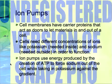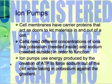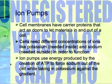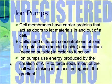There are several different kinds of active transport, the first of which is what we call ion pumps. Some cell membranes have carrier proteins that act as doors to let materials in and out. Some materials, like potassium and sodium ions, need to have differences in concentration — we need a higher concentration of potassium inside our cells, but we want a lower concentration of sodium inside our cells. Ion pumps use energy produced by ATP to force sodium out of the cell while taking in potassium, all the while working against the concentration gradient.